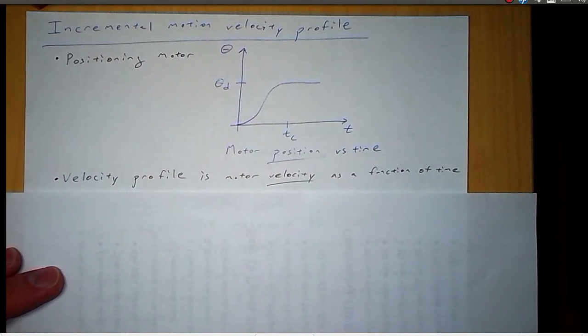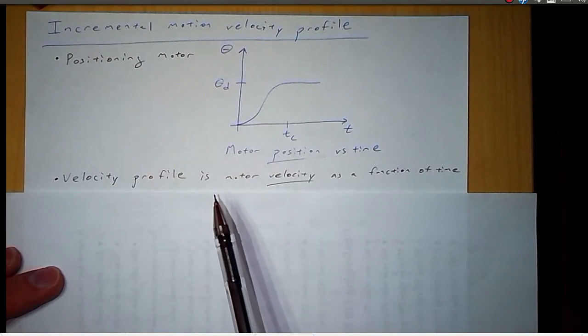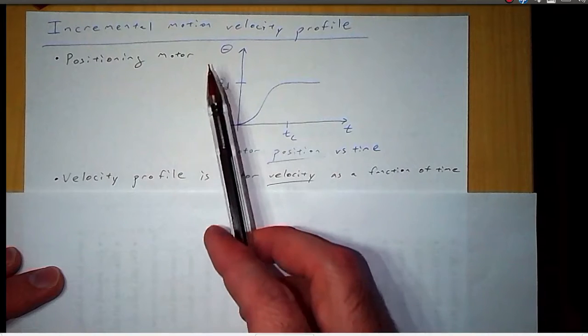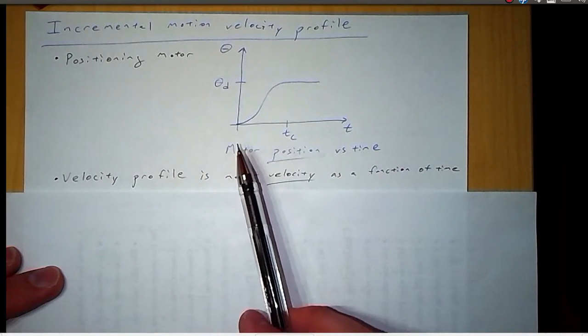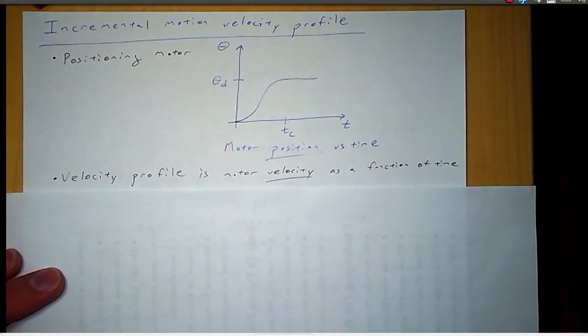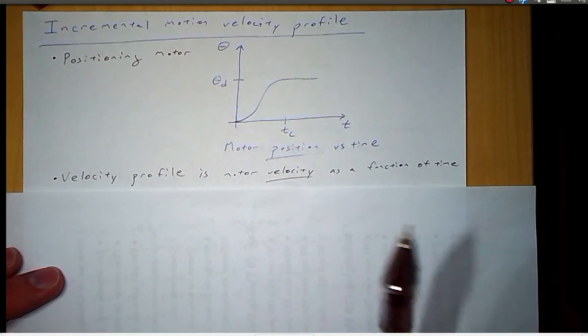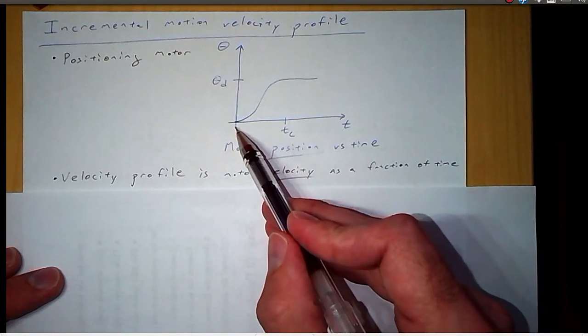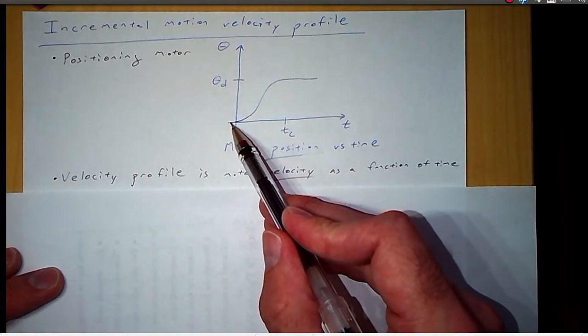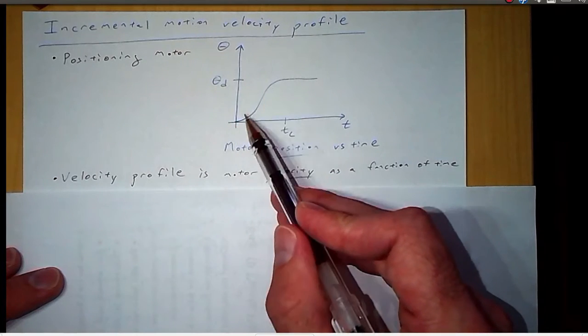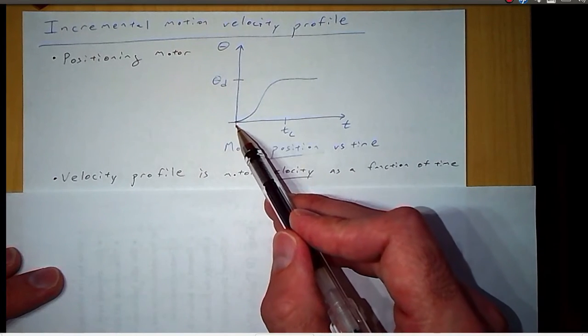So question, what is the time rate of change of theta at t equals zero in this case? It's given by the slope, and according to my drawing, well it's supposed to be zero. So at time zero, the velocity is zero.